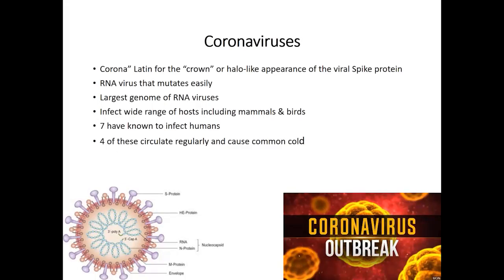RNA viruses typically mutate pretty easily and they have some of the largest genomes. They infect a wide range of hosts: mammals, birds, and humans. As we've seen in the past 10 years or so, between SARS, MERS, and now novel coronaviruses, a number of species of coronaviruses have been identified in animals — some pathogenic, some not. With point mutations and genetic modifications, over time with evolution, we may see more coronaviruses that are infectious to humans.